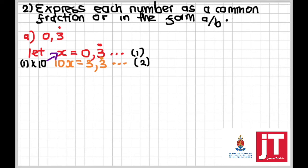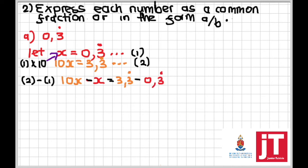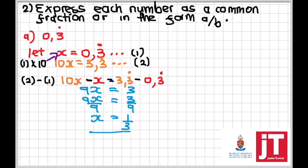We then do equation 2 minus equation 1: 10x − x = 3.3̄ − 0.3̄, simplifying to 9x = 3. It's now a simple linear equation — divide both sides by 9: 9x/9 = 3/9, giving x = 1/3.